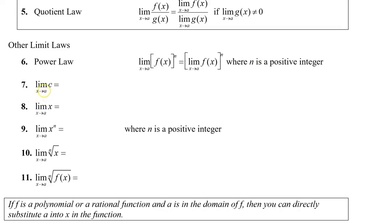Law number seven states what happens when we're looking for the limit of a constant. If we look at the graph where y equals c, that's a straight horizontal line, and no matter what x approaches on that line, the y value is always going to be c. So the limit of a constant as x approaches any number will always be c.